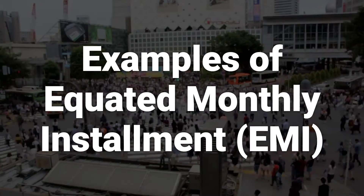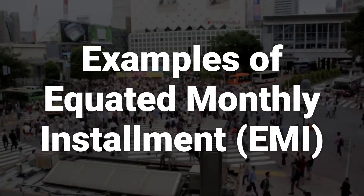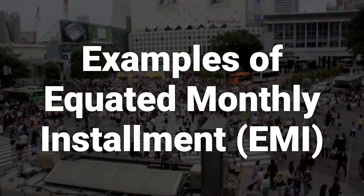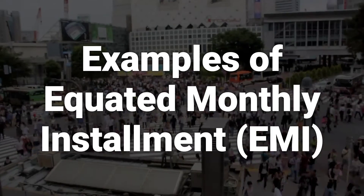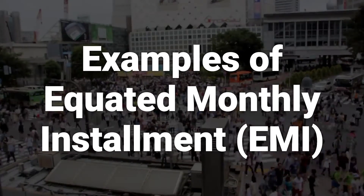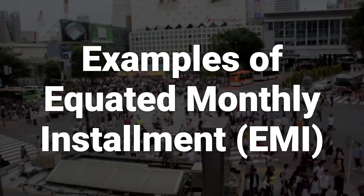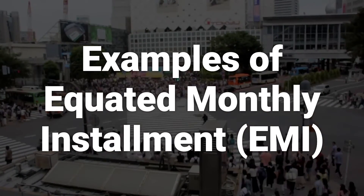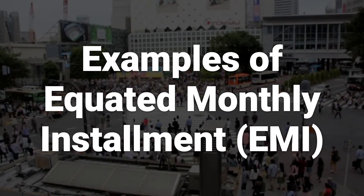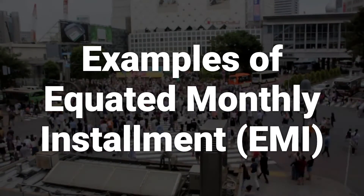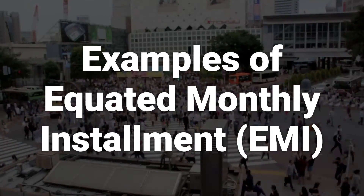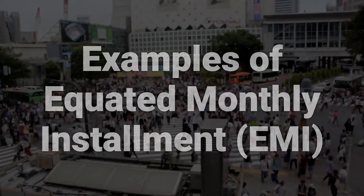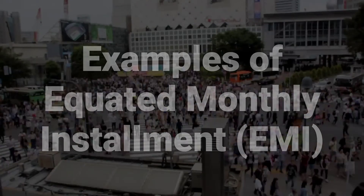To demonstrate how EMI works, let's walk through a calculation using both methods. For example, a mortgage with a principal amount of $500,000 and a 3.5% interest rate for 10 years would result in monthly payments of approximately $5,625 using the flat rate method and $4,944.29 using the reducing balance method.